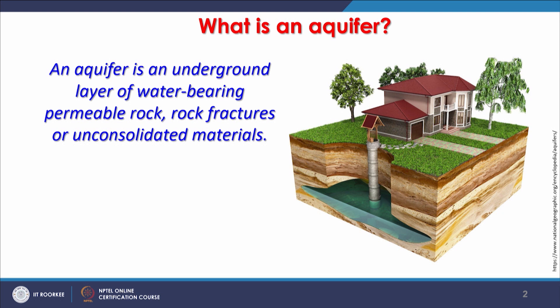An aquifer is an underground layer of water bearing permeable rock — it is a subsurface feature. Each word here is important: water bearing means it is saturated with water, and permeable means it allows water to move from one place to another within that layer. These layers may be igneous, sedimentary, or metamorphic rocks. Permeability may come from pore connectivity in sedimentary rocks, rock fractures, or unconsolidated loose material such as in the Indo-Gangetic Plain or Doon Valley.